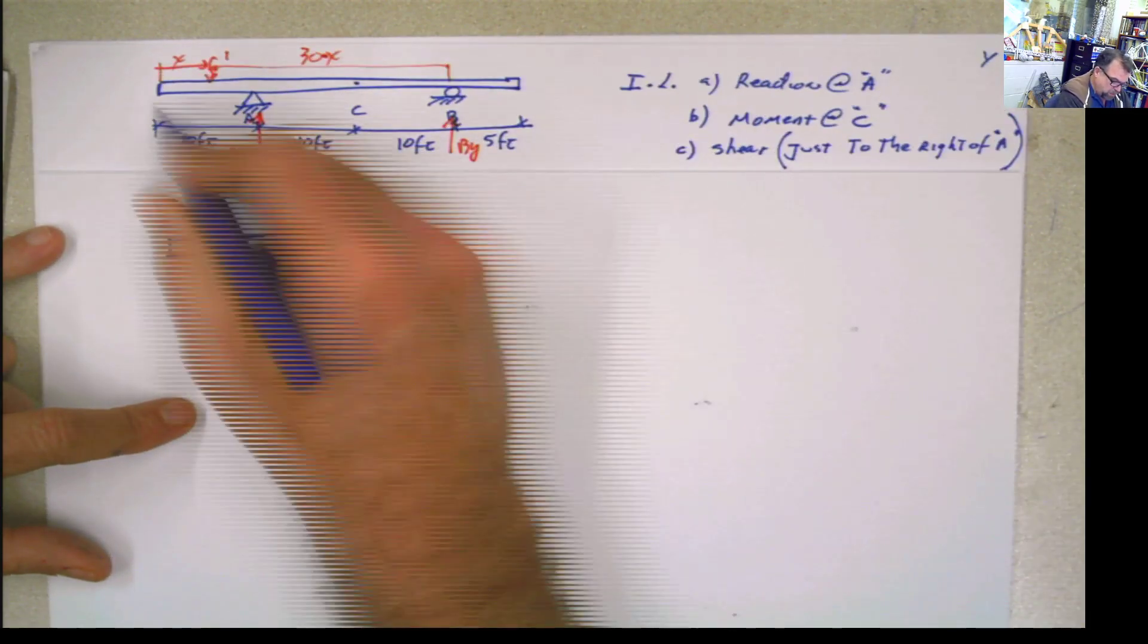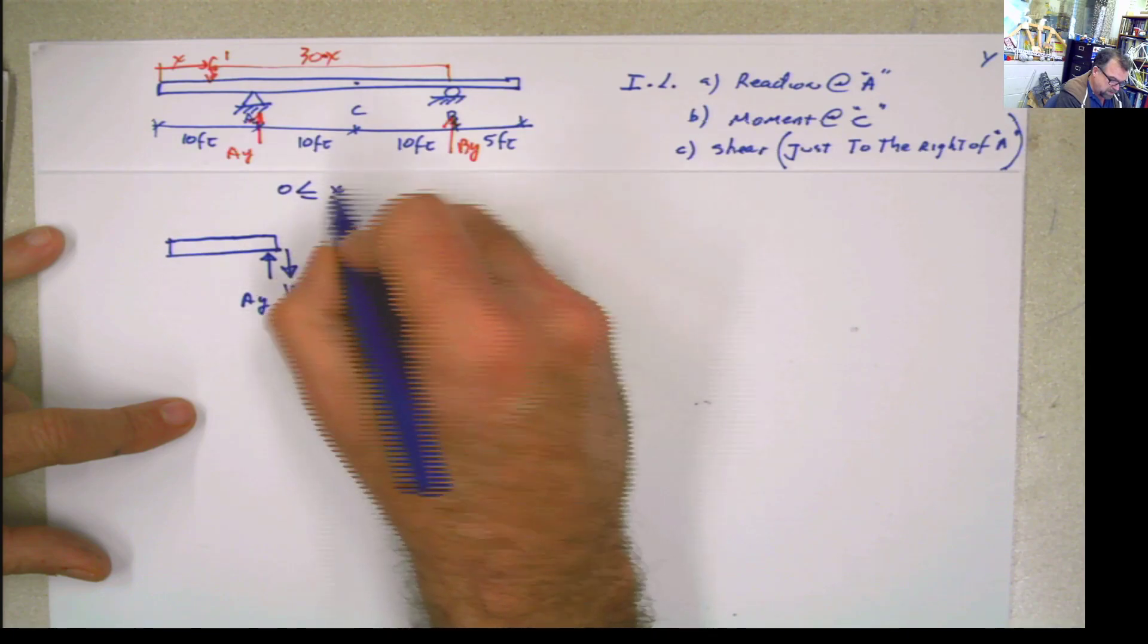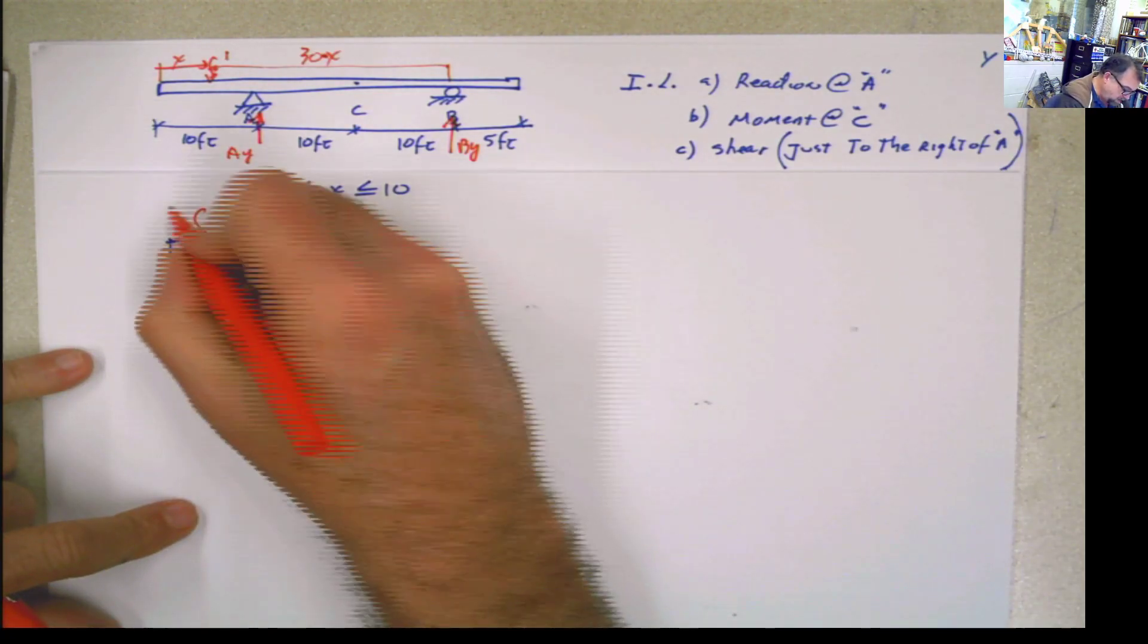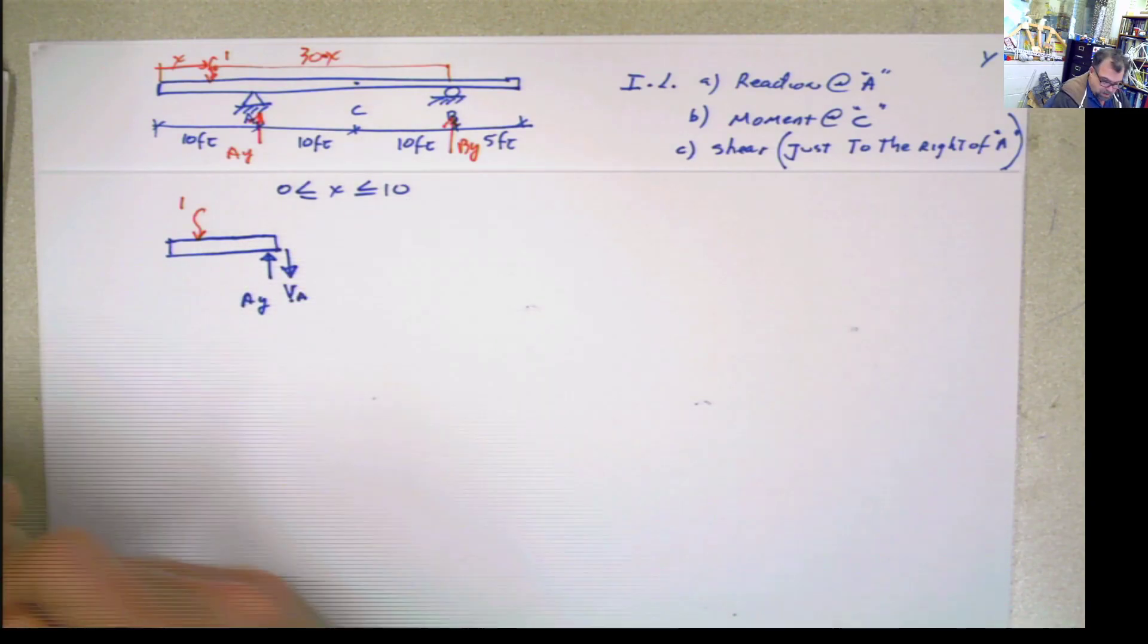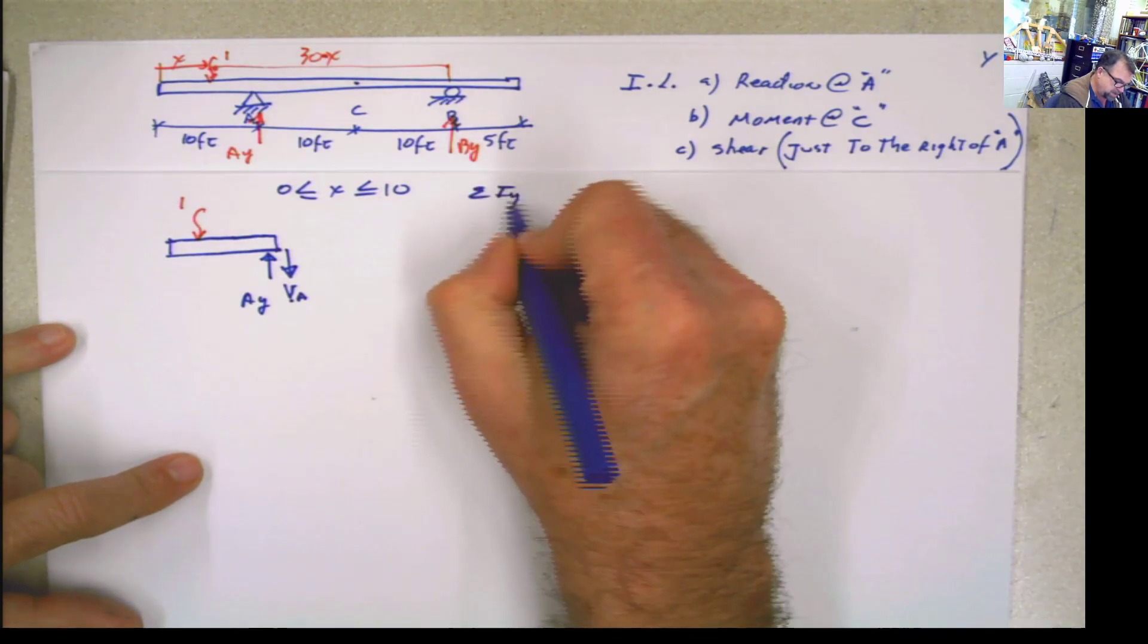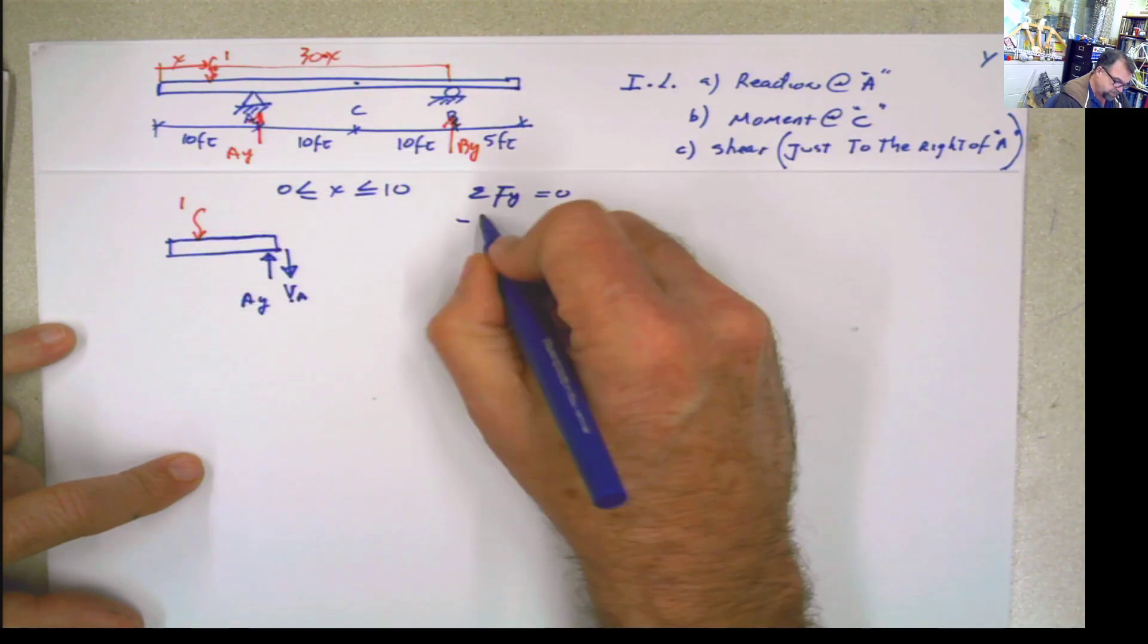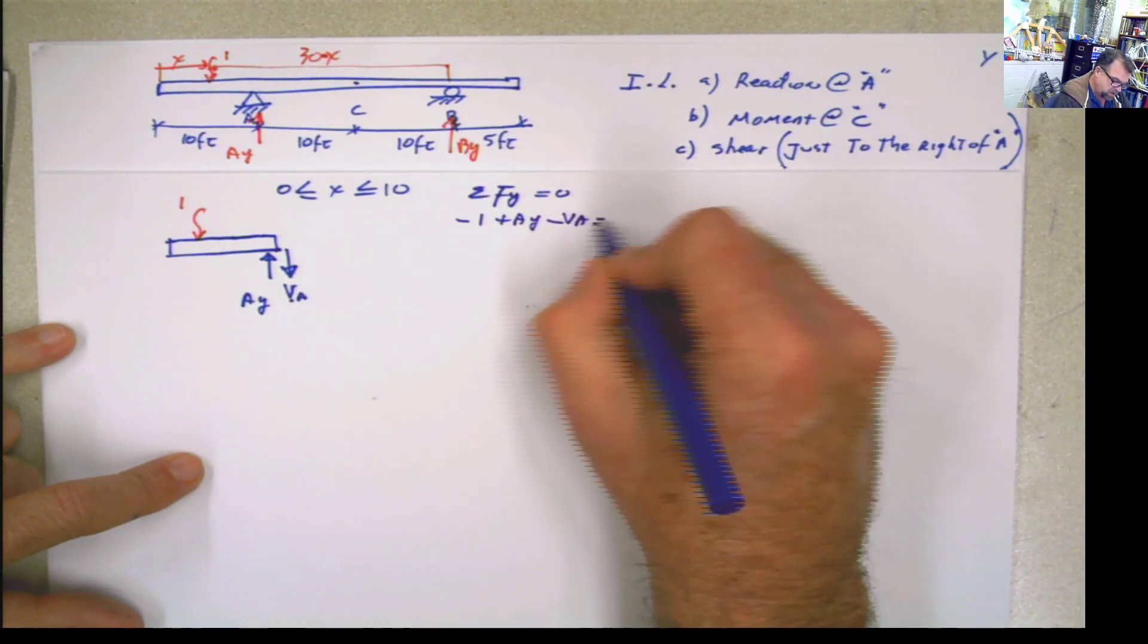And of course, if I'm working in this interval, this interval is going to be 0 smaller or equal than x is smaller or equal than 10. What does that mean? That for this part, I'm going to have a load of 1 on top of this, moving up to this point. What do we do? Summation of forces in y equals 0. What do we have here? Negative 1 plus Ay minus Va equals 0.